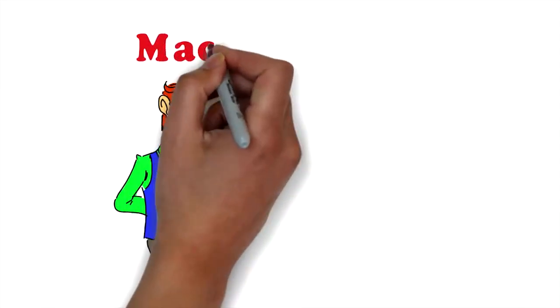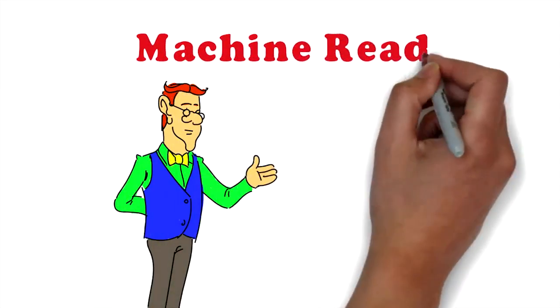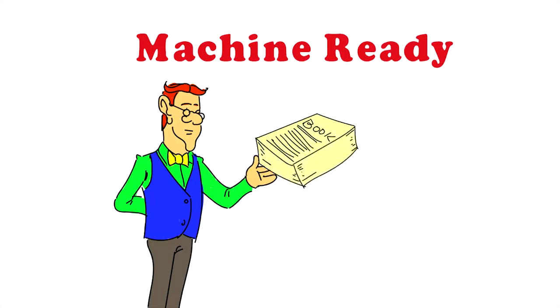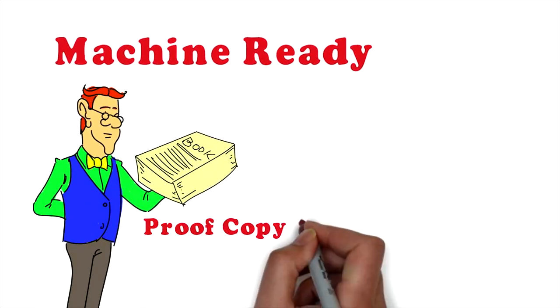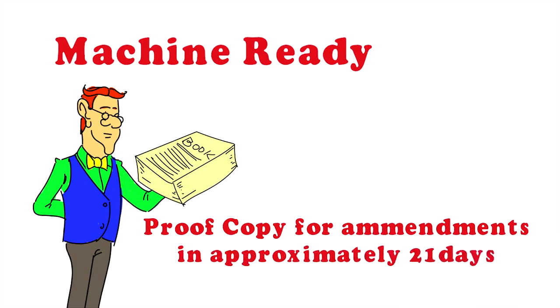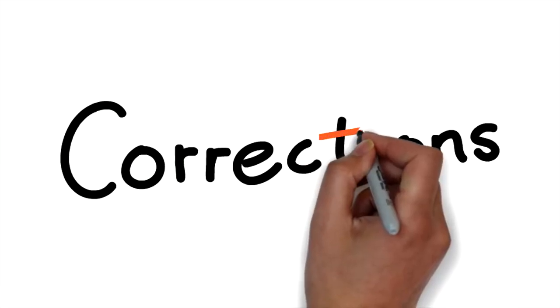Once this is complete, we will create a machine-ready document, and you will receive a proof copy of your book or books for review and any final amendments within approximately 21 days.